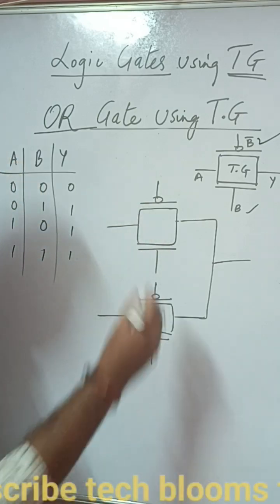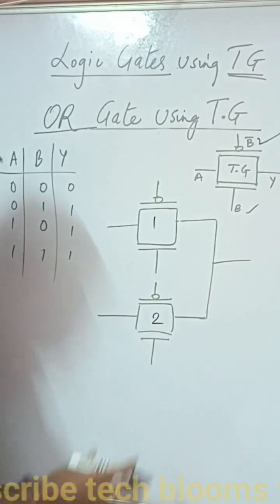So basically we need to have two transmission gates designed here that is one and two kept parallely to each other.